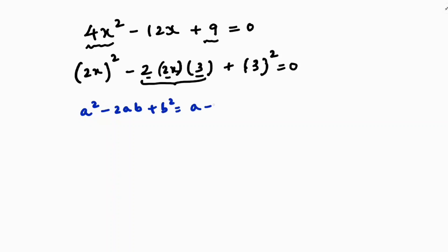Which is nothing but (a minus b) whole square. So this, the above step, I'll write as (2x minus 3) whole square. As you need to get 0, so you can rewrite this as (2x minus 3) into (2x minus 3) equals 0.